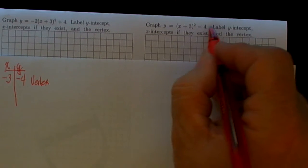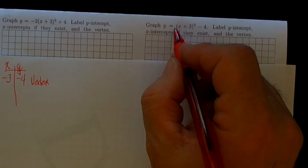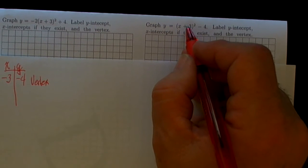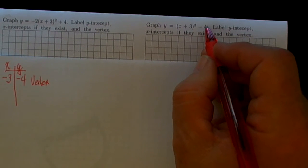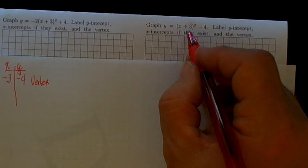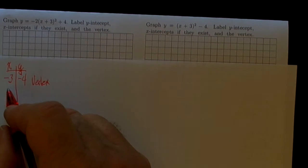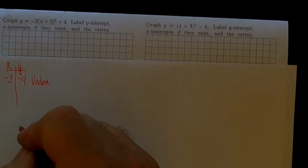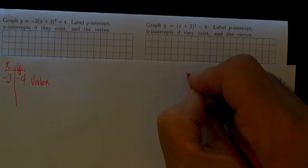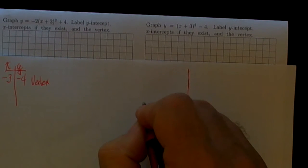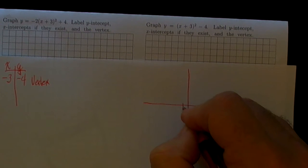We can just read that from this particular equation: a times (x minus h) quantity squared plus k. The vertex will be at (h, k), so the vertex is at (-3, -4). Let's put that in place: -1, -2, -3, -1, -2, -3, -4. There's the vertex.